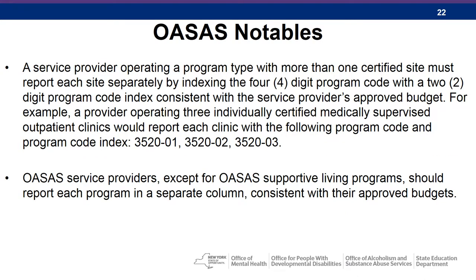A service provider operating a program type with more than one certified site must report each site separately by indexing the four-digit program code with a two-digit program code index, consistent with the service provider's approved budget. For example, a provider operating three individually certified medically supervised outpatient clinics would report each clinic with program codes 352001, 352002, and 352003. OASIS service providers, except for OASIS supportive living programs, should report each program in a separate column consistent with their approved budgets.